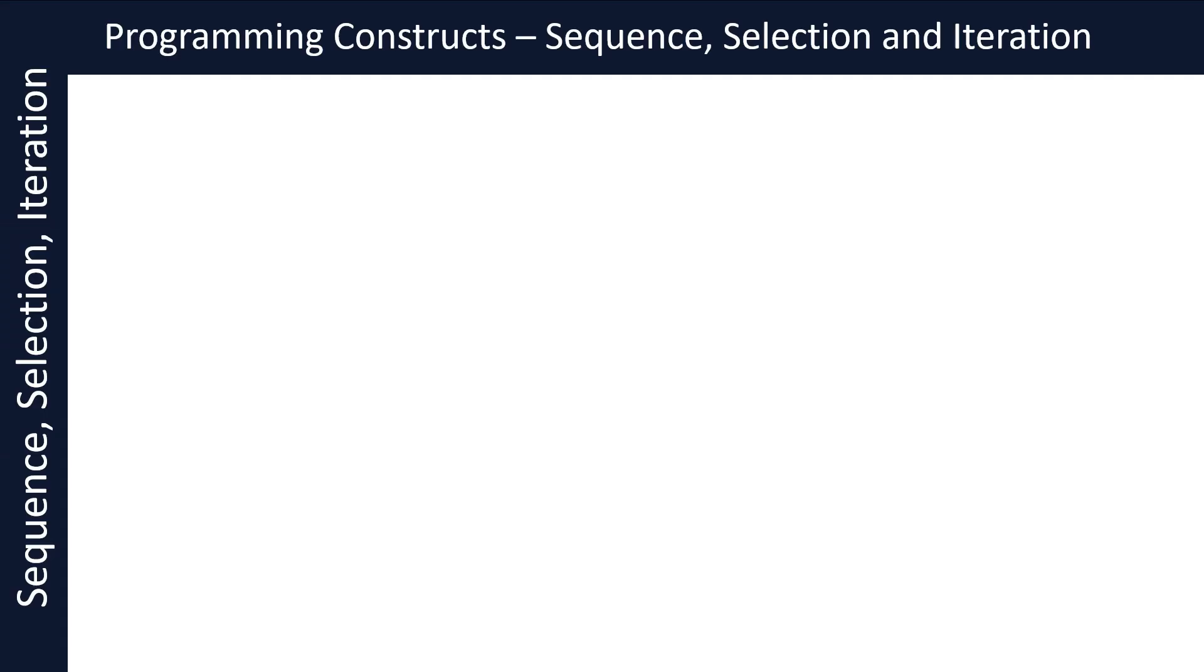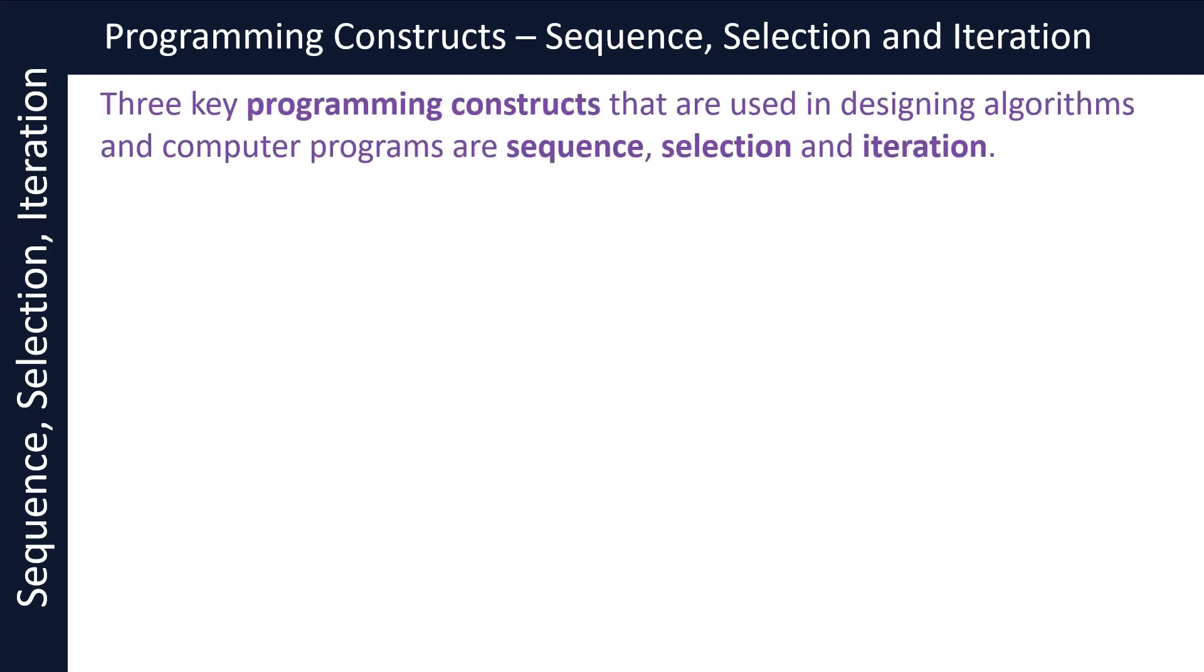In this video, let's look at programming constructs using algorithms. Three key programming constructs that are used in designing algorithms and computer programs are sequence, selection, and iteration. Let's briefly discuss these constructs in the context of algorithms. Here, let's first define each of these.